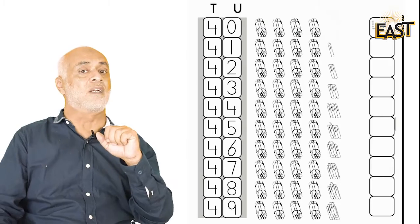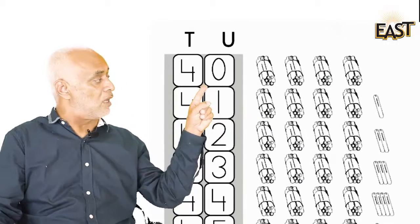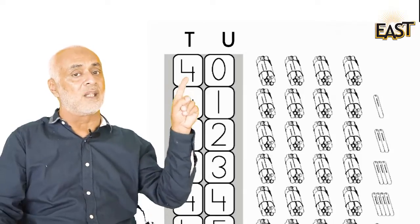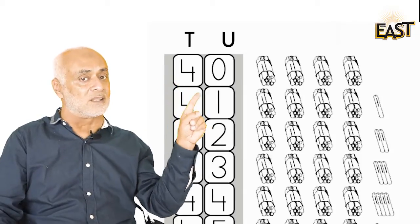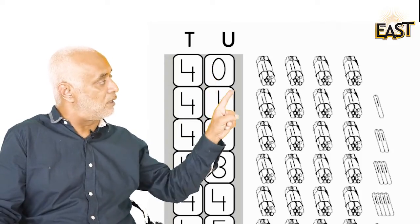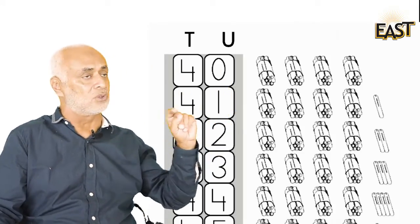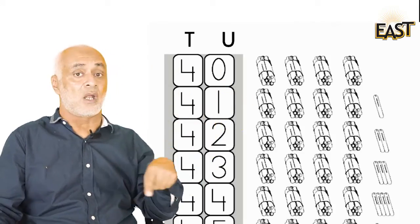Now look here, when we have forty, that is four and zero, right? So under the T we write four and under the U we write zero, so that becomes forty.